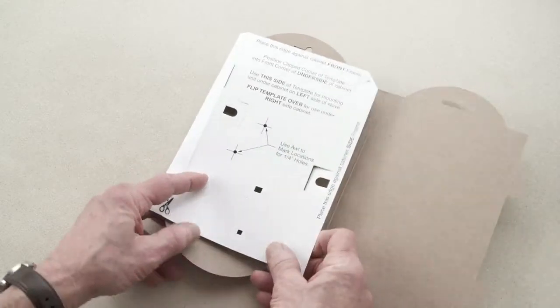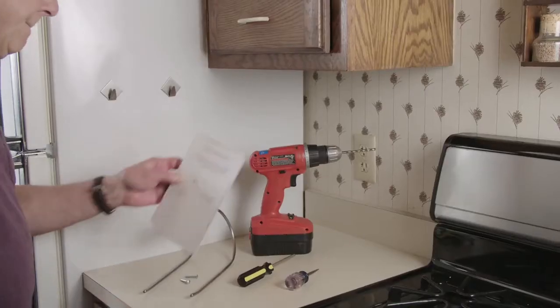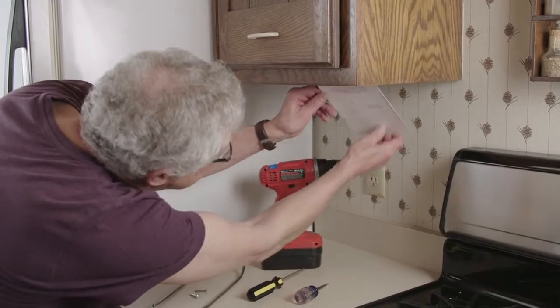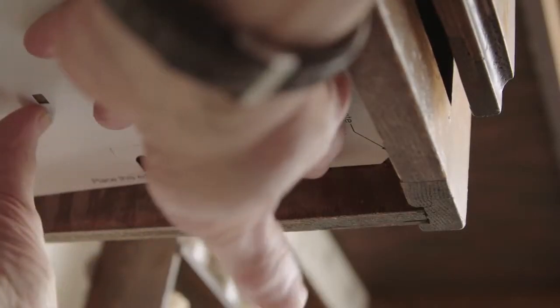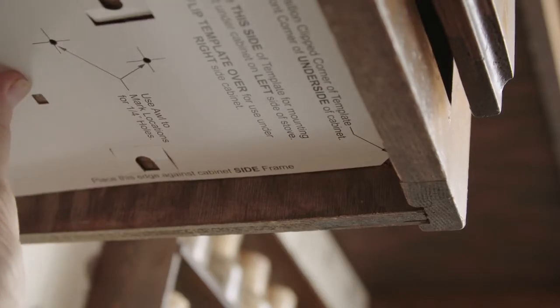First, locate the template included in the packaging. Place the template against the underside of the cabinet where you'd like to install your cover cradle, making sure that the front edge is flush and the arrow points in the general direction of your stovetop.